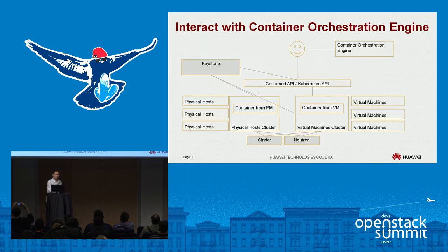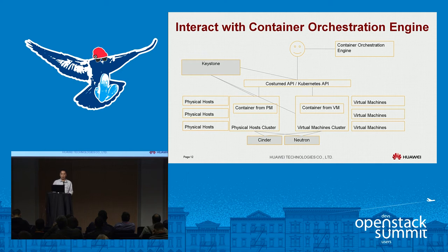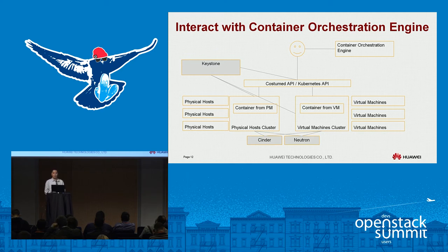Now let's bring it back to our architecture. We have OpenStack and our container orchestration engine working together. You can see containers running on physical machines or virtual machines. They all talk to Keystone for authentication and authorization, and go through either the native API or custom API to reach the container orchestration engine, passing information to Cinder, Neutron, and all OpenStack components to make it work as a whole solution.